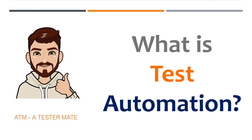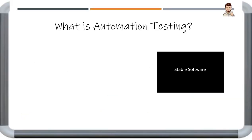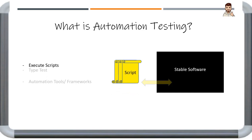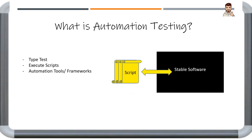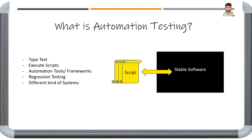Automation testing is the process to execute test cases using automation tools or frameworks. Normally, automation testing is focused on validating regression testing. It can be applied to all different types of platforms or applications.